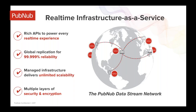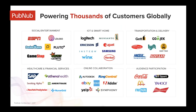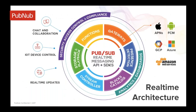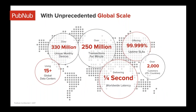PubNub can enable application developers to leverage the best real-time technology without having to earn a PhD in real-time infrastructure. PubNub's been in business for around six years now, and we power some of the biggest and best innovators who require real-time technologies all around the world. As the largest distributed computing network in the world, we're already processing five times the amount of data than Twitter. With over 2,000 customers and 330 million unique devices publishing and receiving streams of data, our customers are finding new ways to innovate and monetize these streams.